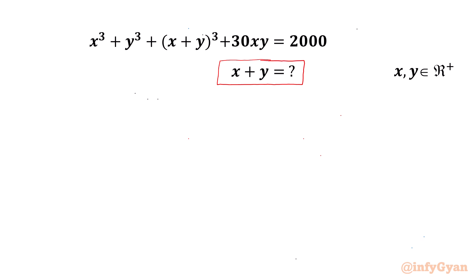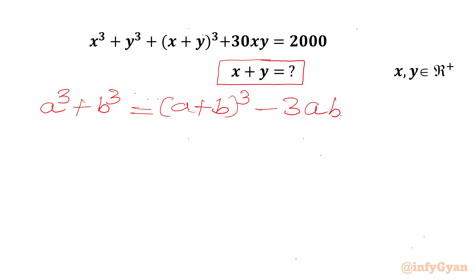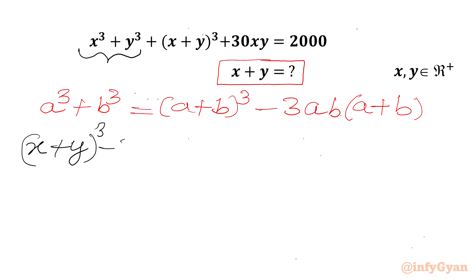Let's get started by writing one algebraic identity first. I will write the a³ + b³ formula. We can write this as (a + b)³ minus 3ab times (a + b). This is what we know. Let's apply it in this problem. So I can write x³ + y³ as (x + y)³ minus 3xy times (x + y).